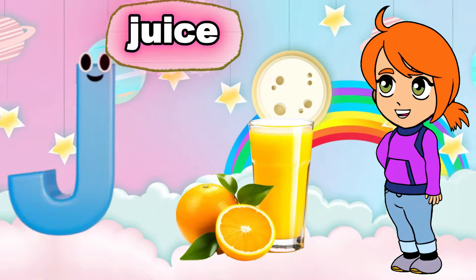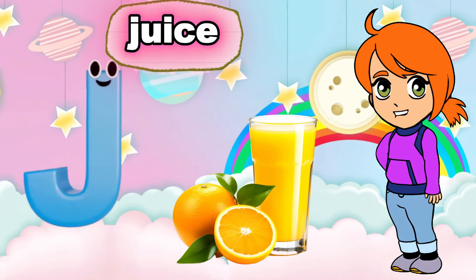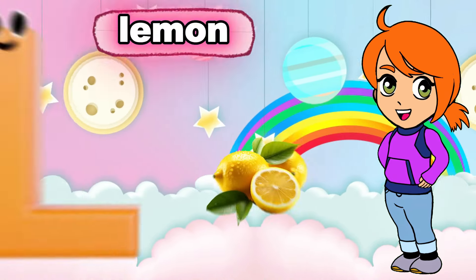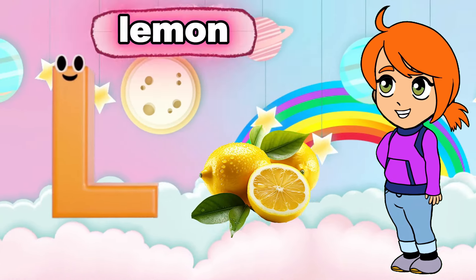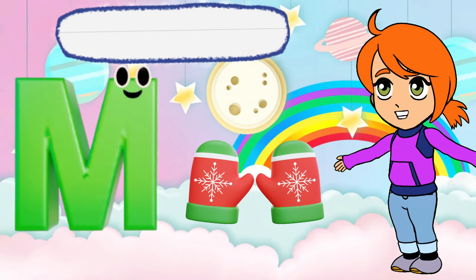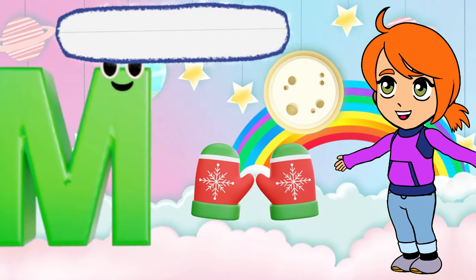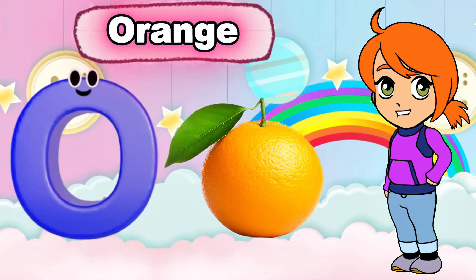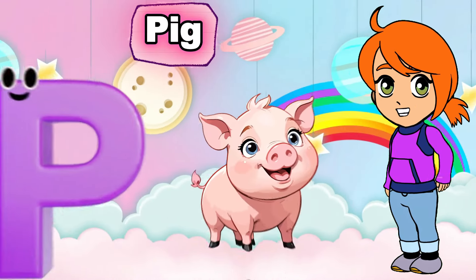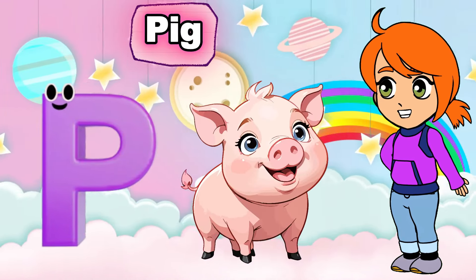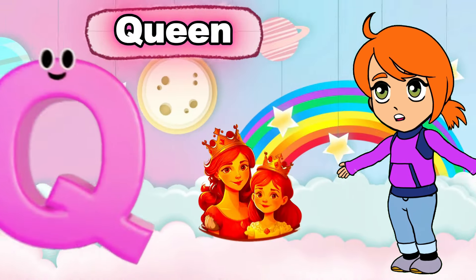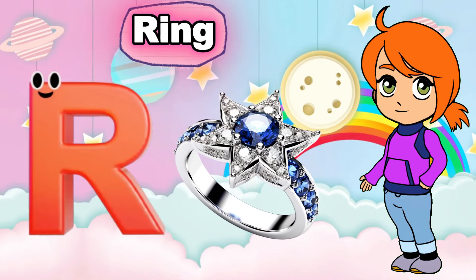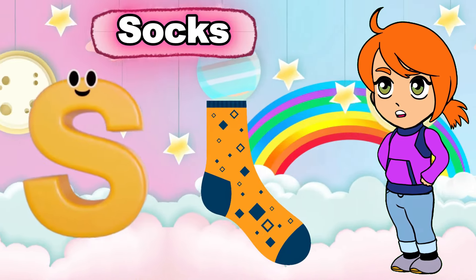I is for Igloo, e-e-e-igloo. J is for Juice, j-j-j-juice. K is for Kitten, k-k-k-kitten. L is for Lemon, l-l-l-lemon. M is for Mittens, m-m-m-mittens. N is for Nest, n-n-n-nest. O is for Orange, O-O-O-orange. P is for Pig, P-P-P-pig. Q is for Queen, C-C-Q-Queen.